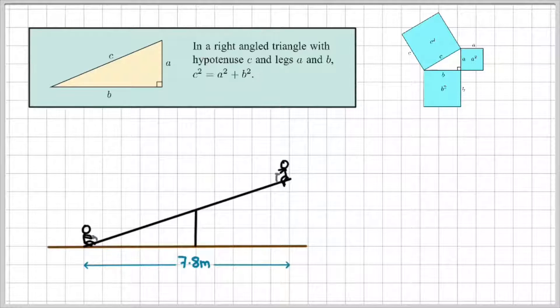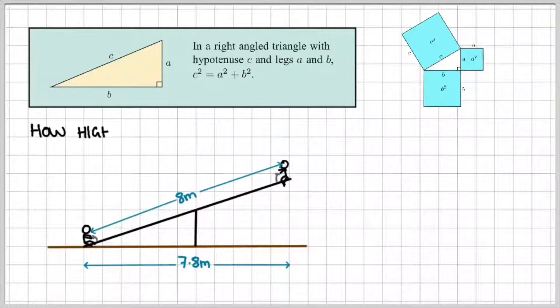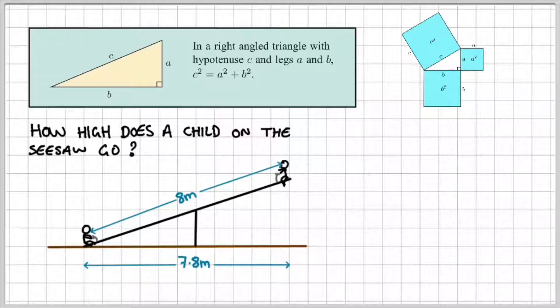So let's look at a problem. We have Jason and his sister in the park playing on the seesaw and what we want to find out is, how high does a child on the seesaw go? We know that we've got 7.8 meters across and that the seesaw is 8 meters long. What we need to find out is the height of the seesaw.